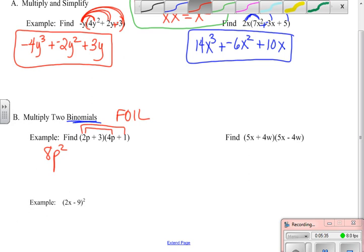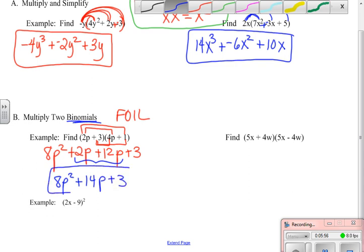First 2 terms times each other. Outside terms times each other. Inside terms times each other. And our last terms times each other. What's usually going to happen is that your outside and your inside will combine. And so when you combine like terms and finish up the problem, you will end up adding those outside and inside terms.